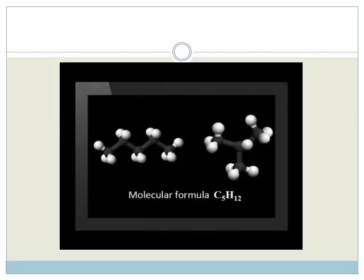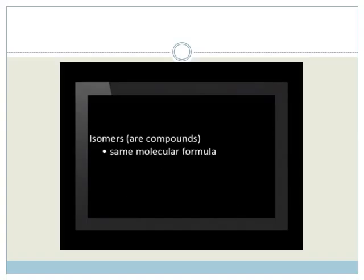We thus have two compounds with the same molecular formula but different structural formulae. These compounds are called isomers. Isomers are compounds with the same molecular formula but different structural arrangements.